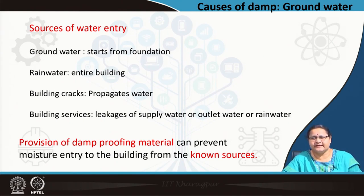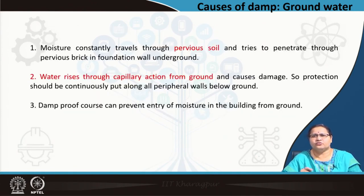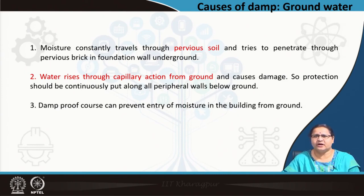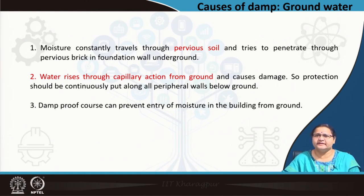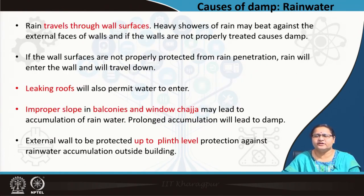Coming to the first source — ground water. Moisture constantly travels through pervious soil and tries to penetrate; water rises by capillary action from the ground and causes damage. Protection should be continuously put along the peripheral wall below ground. Damp proof course is one such measure. What materials are involved we will discuss in the next lecture, but today we restrict to the causes.